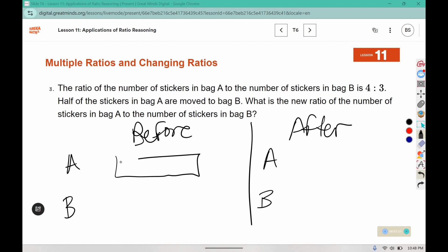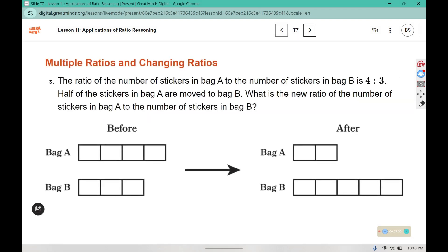Before we had a ratio of 4 to 3. Try and keep your boxes around the same size. Half of the stickers in bag A are moved to bag B. Well, if I split this in half, that would mean two of them have to get moved. So now I have two here and I have five for bag B. Like you can see here, these two got moved down, so now there are five here. So what is the new ratio of the number of stickers in bag A to the number of stickers in bag B? This ratio is 2 to 5.